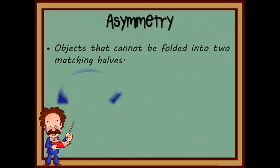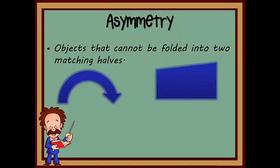The opposite of symmetry is asymmetry. If an object cannot be folded into two matching halves, it is considered asymmetrical. Here are a few shapes that are asymmetrical. No matter which way you try to fold these in half, they will never match up perfectly.